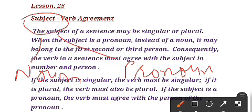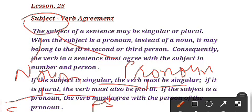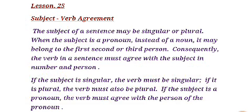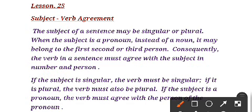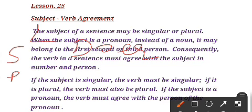If the subject is a pronoun, it will have a singular or plural subject. When we are talking about a subject, the subject is the doer of the action — the one who performs the action in a sentence. That can be singular or plural, and also it can be a noun or pronoun.